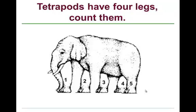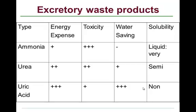We're going to start off in a way that you might think is kind of funny, but we're going to discuss what kinds of chemicals these animals excrete in their urinary system. We're going to look at the excretory waste products of vertebrates in general, not just tetrapods. There are three common excretory waste products in vertebrates: ammonia, urea, and uric acid.